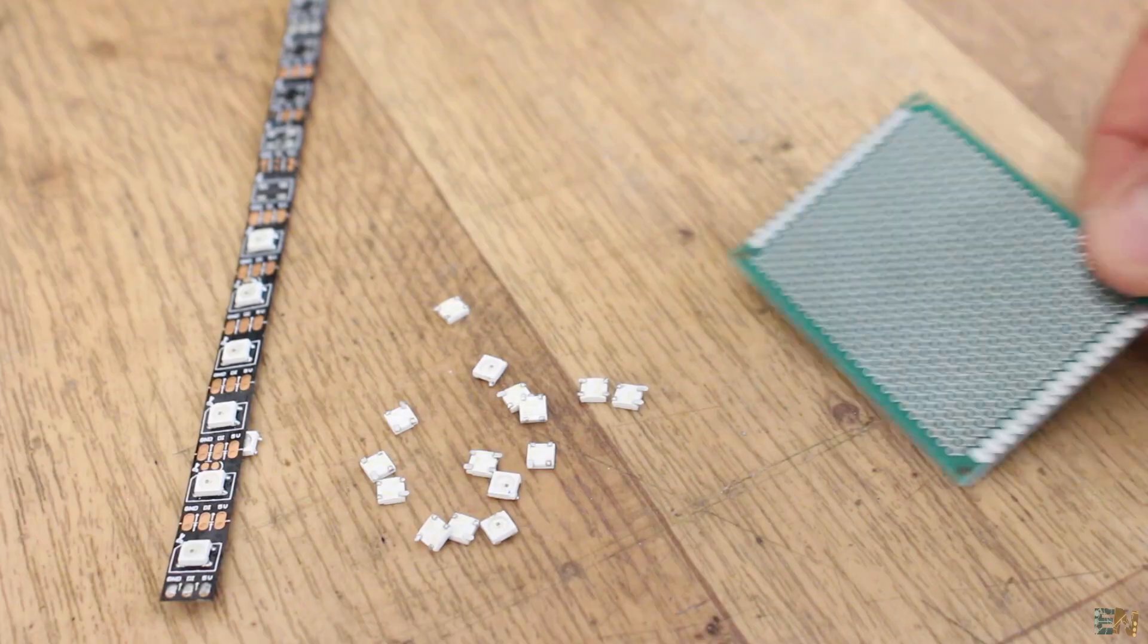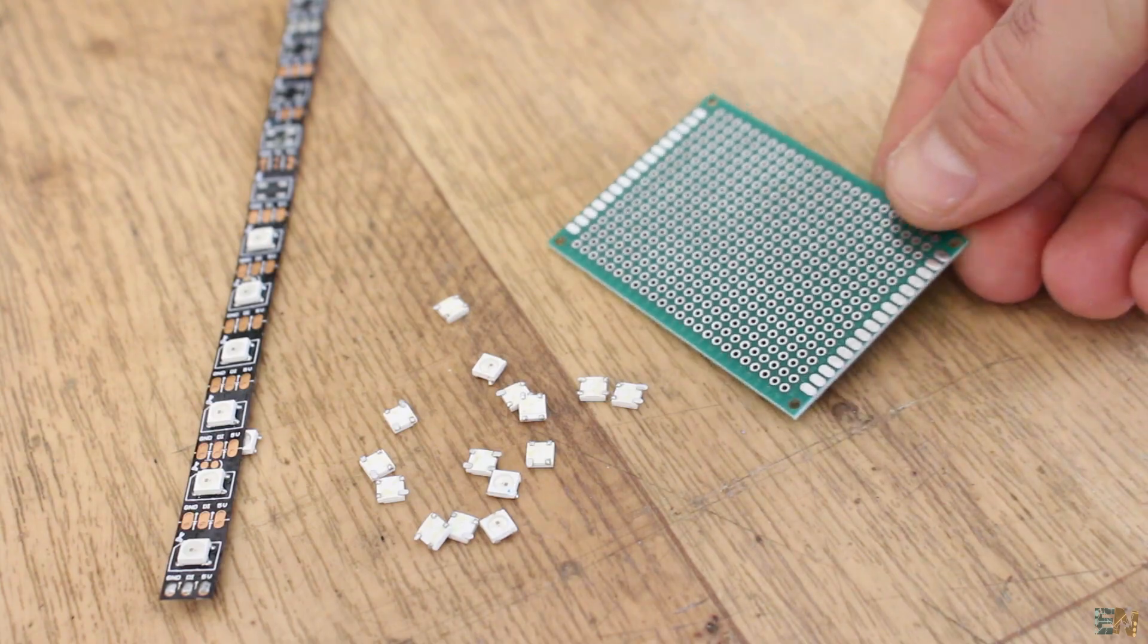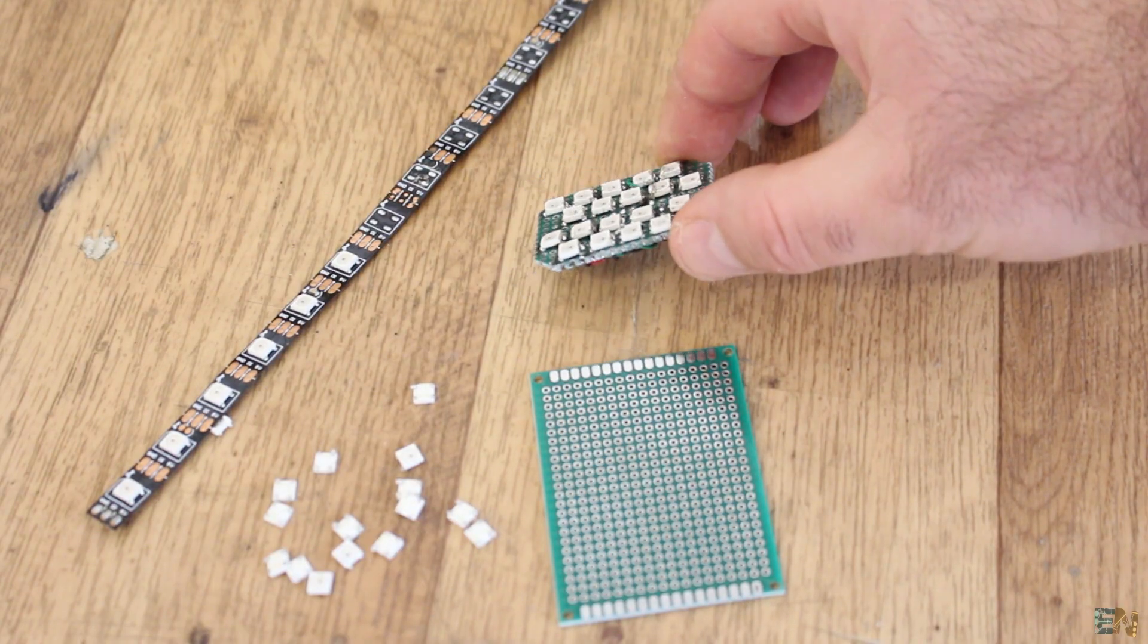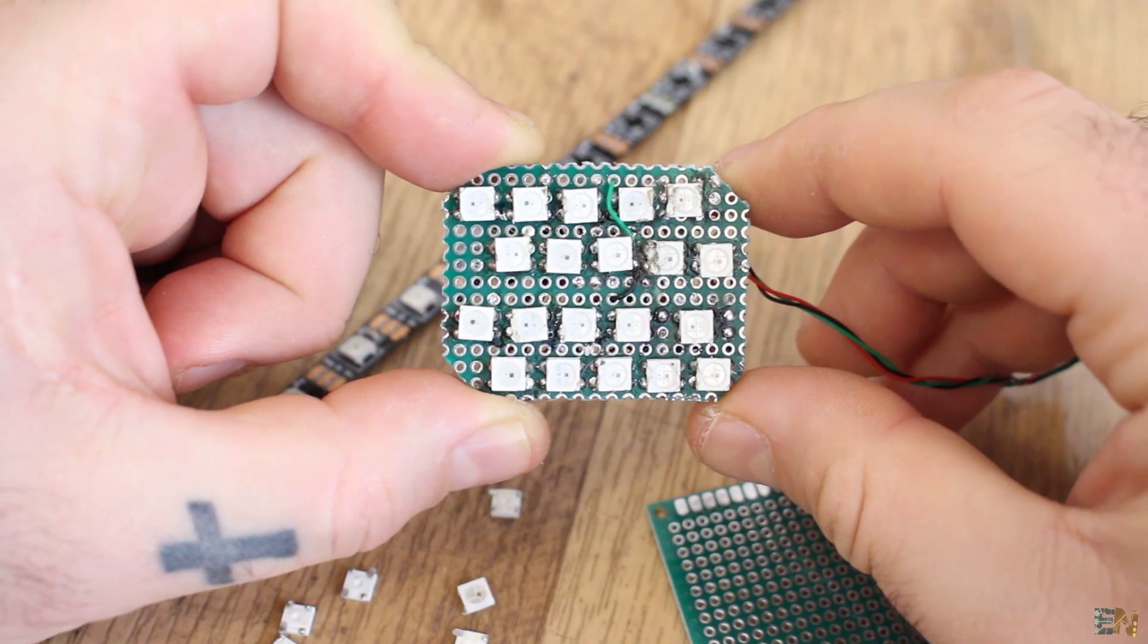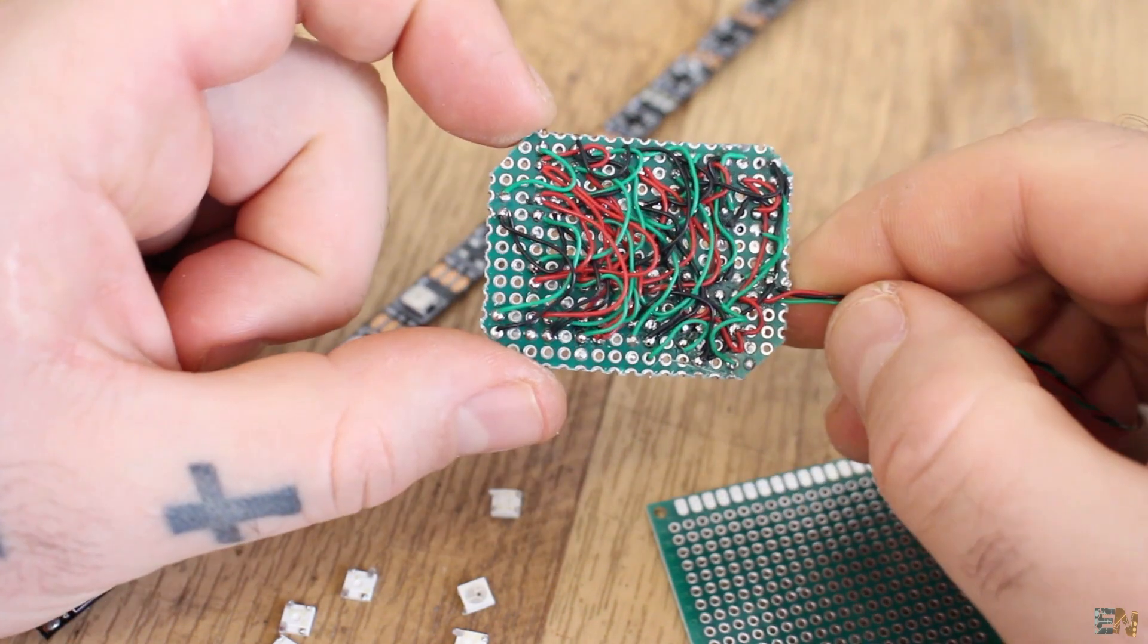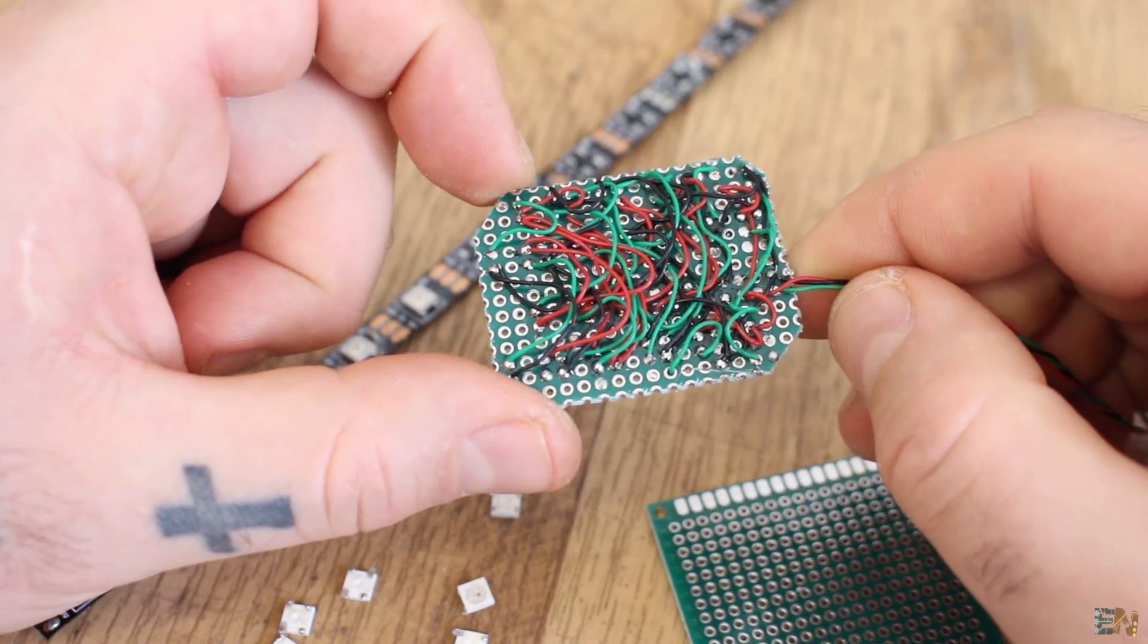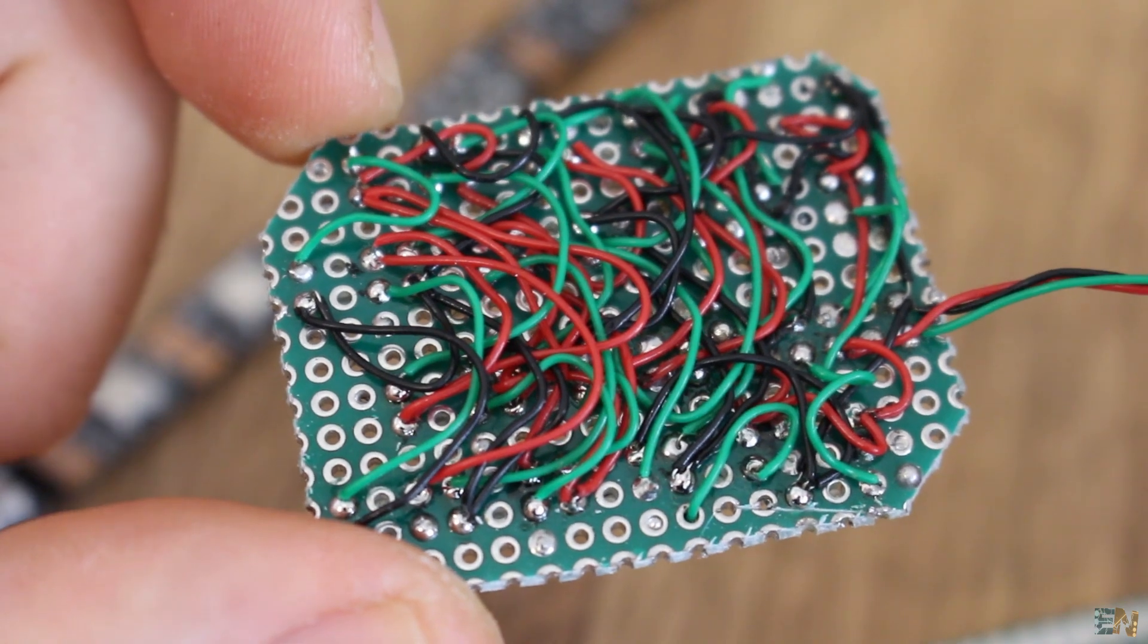Use the multimeter to identify each one. Then I solder the LEDs to a drilled PCB like this one. Soldering these small LEDs might take you some time. Then we make the connections with very thin wires.